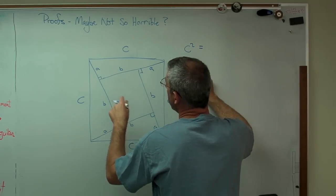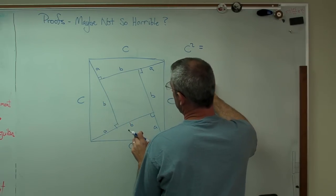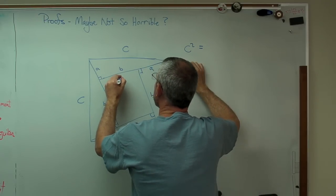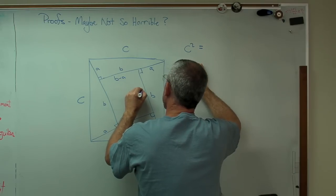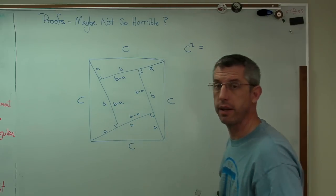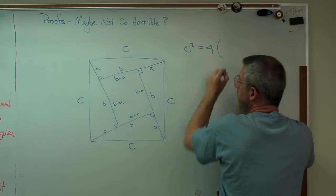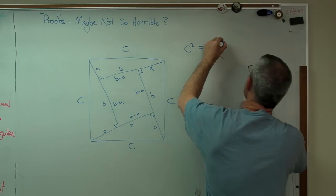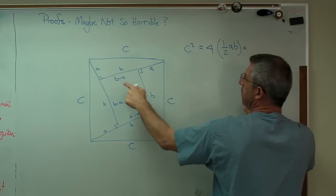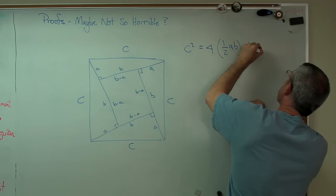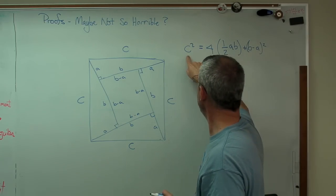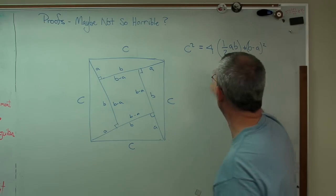Now this side right here, well, if that's B, and that's A, that distance here must be B minus A, B minus A, B minus A, and B minus A. So it's four times one half AB, because that's the size of one triangle, plus B minus A squared. So all we've done so far is say that's the area of the square, and so is that. That's all.